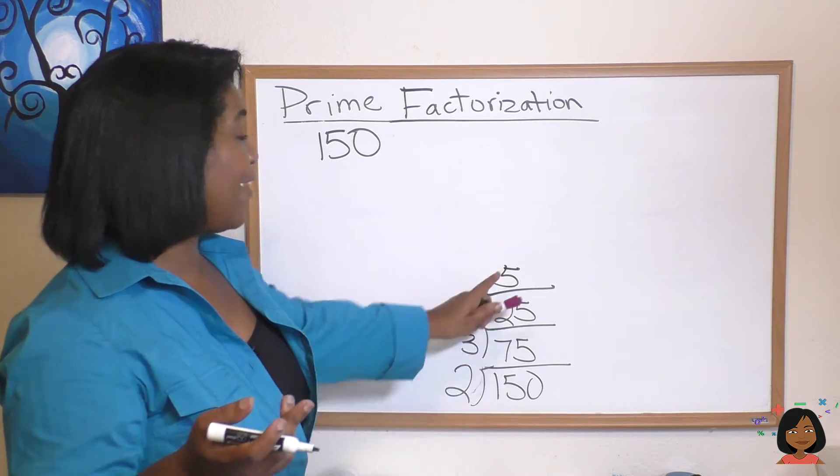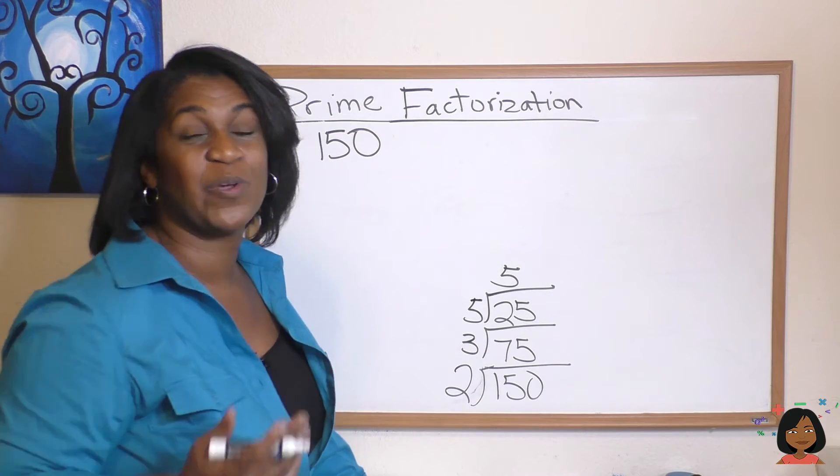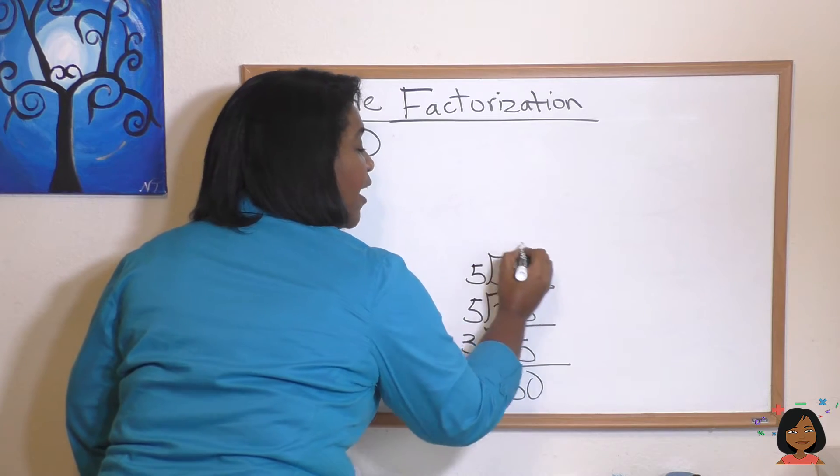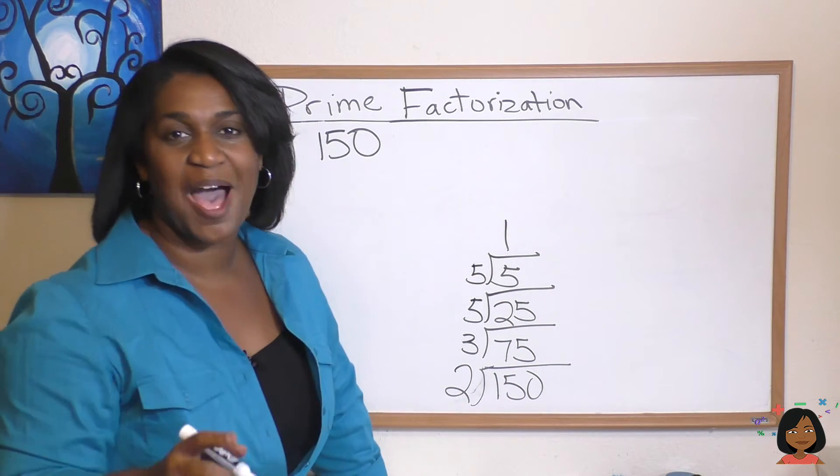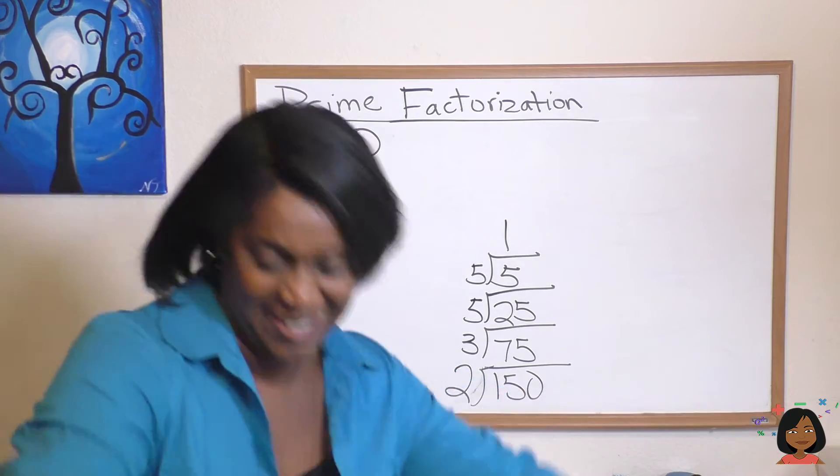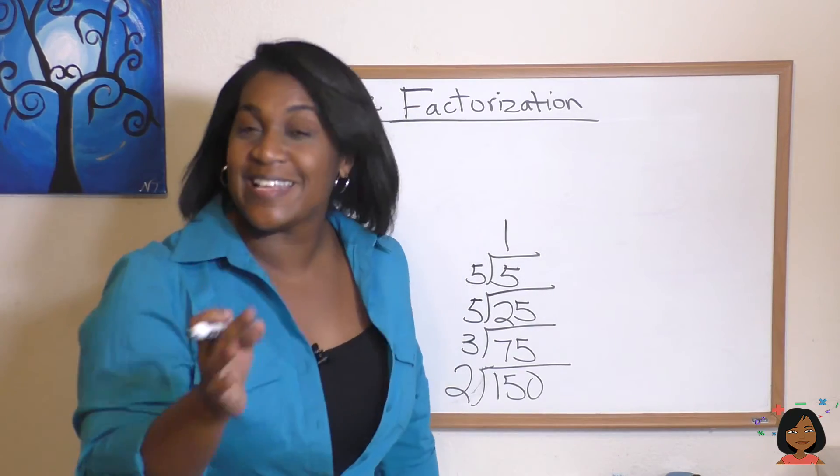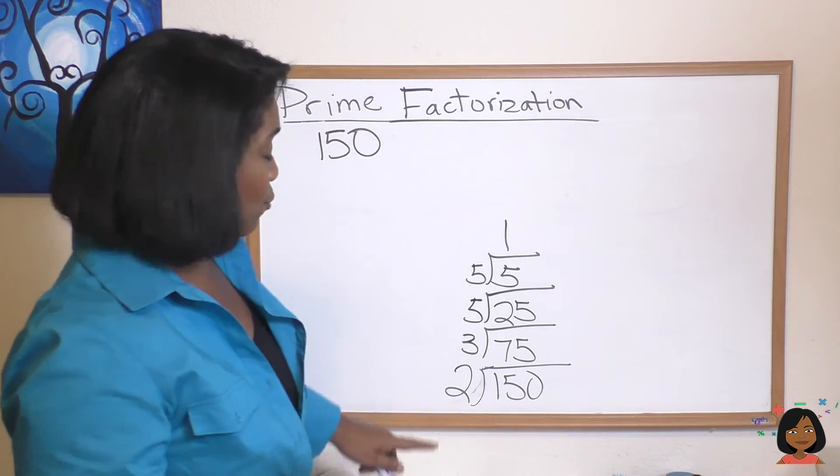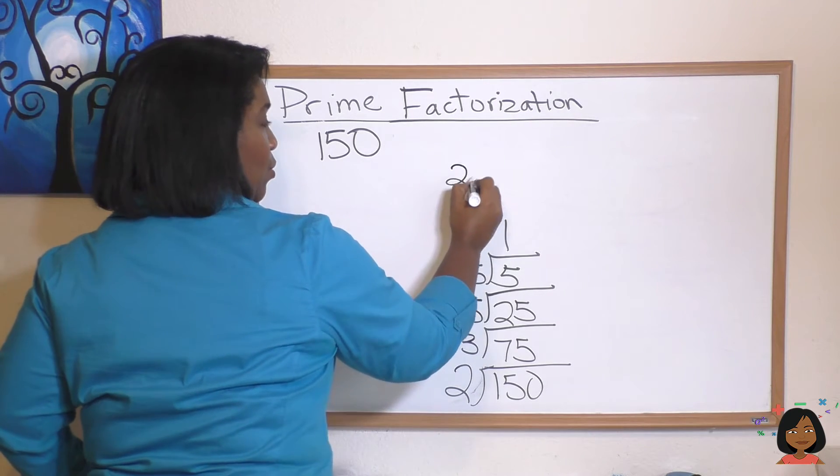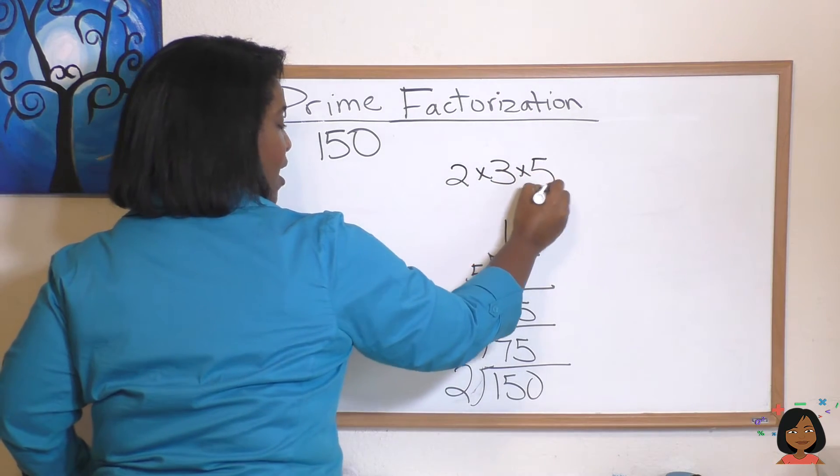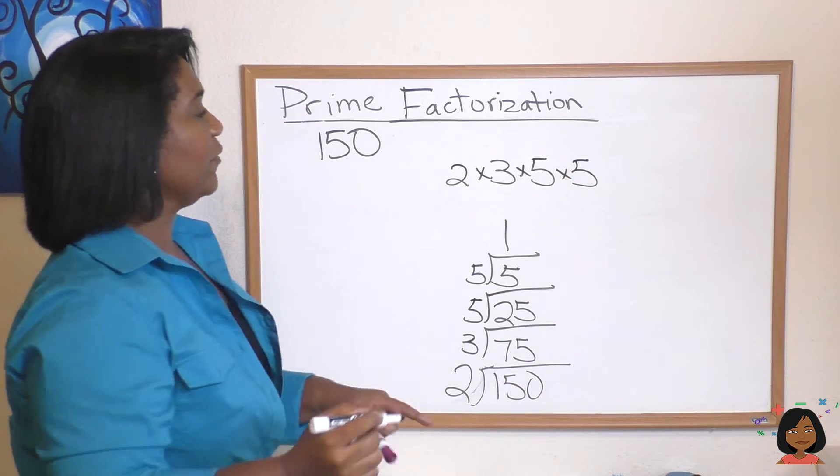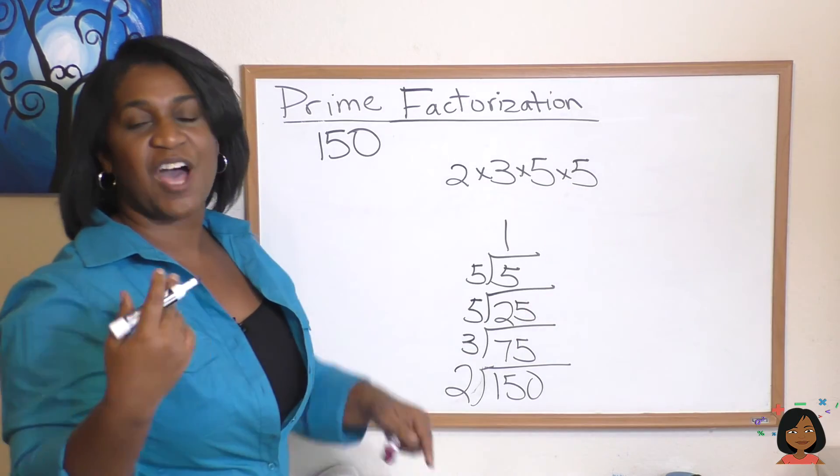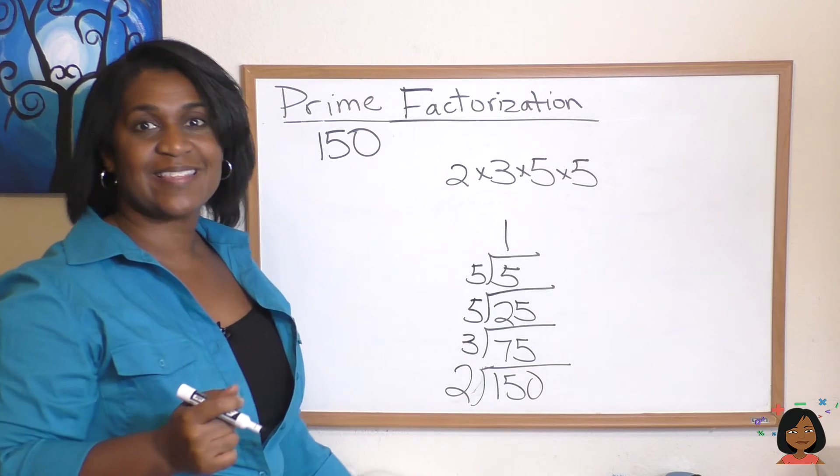Are we done? Well, 5 is a prime number, but we do division by primes until we get to the number 1. So we're going to do this one more time. 5 can go into 5 one time. When 1 is the king of the castle, you can stop your division by primes. And now we just write our numbers. We have 2 times 3 times 5 times 5. 3 times 2 is 6. 6 times 5 is 30. 30 times 5 is 150. And that's it.